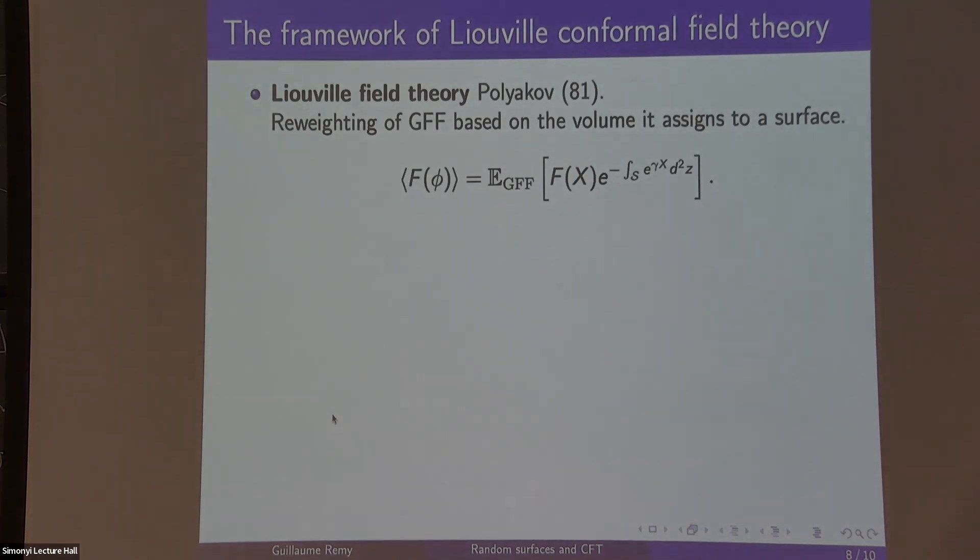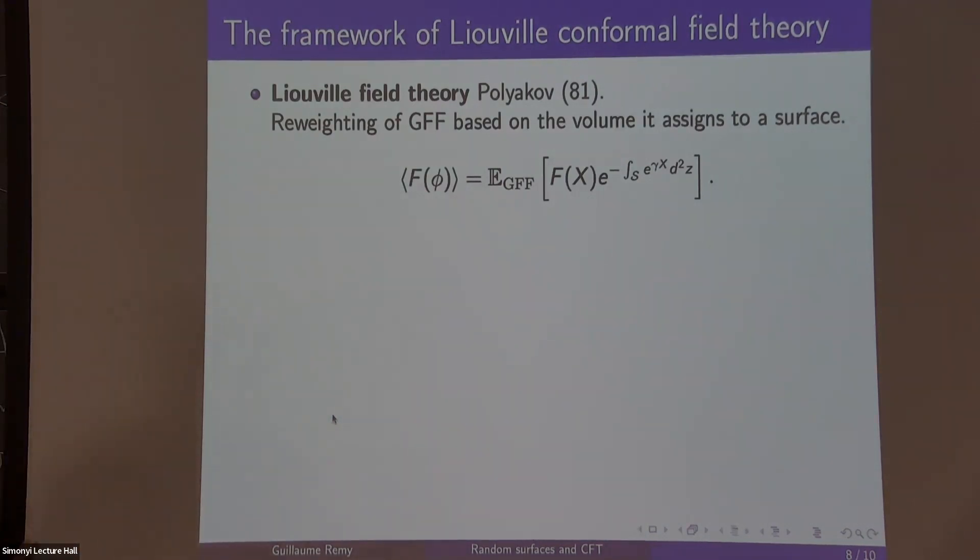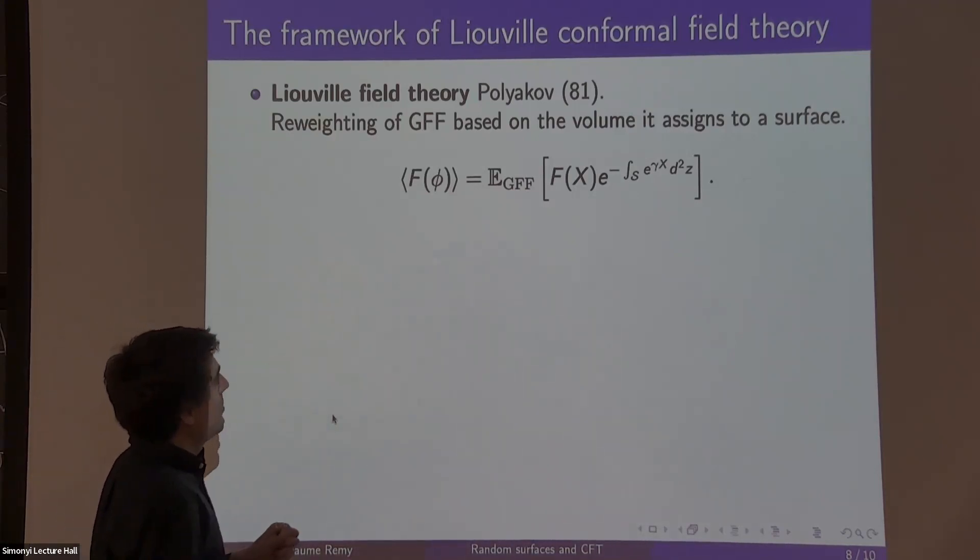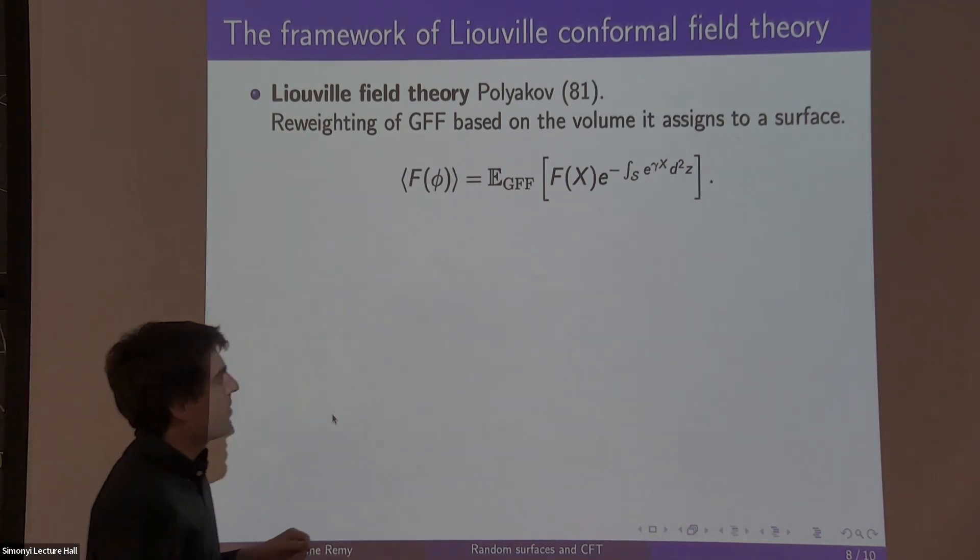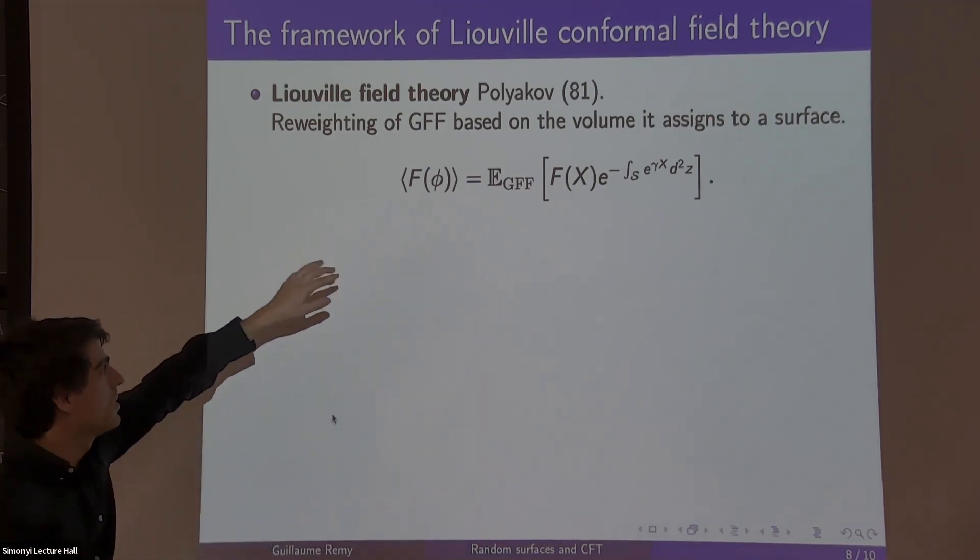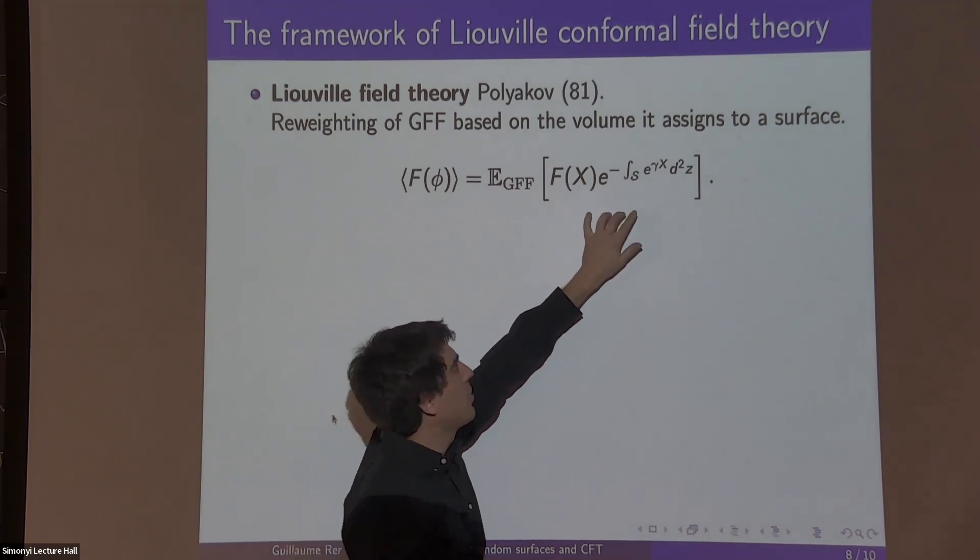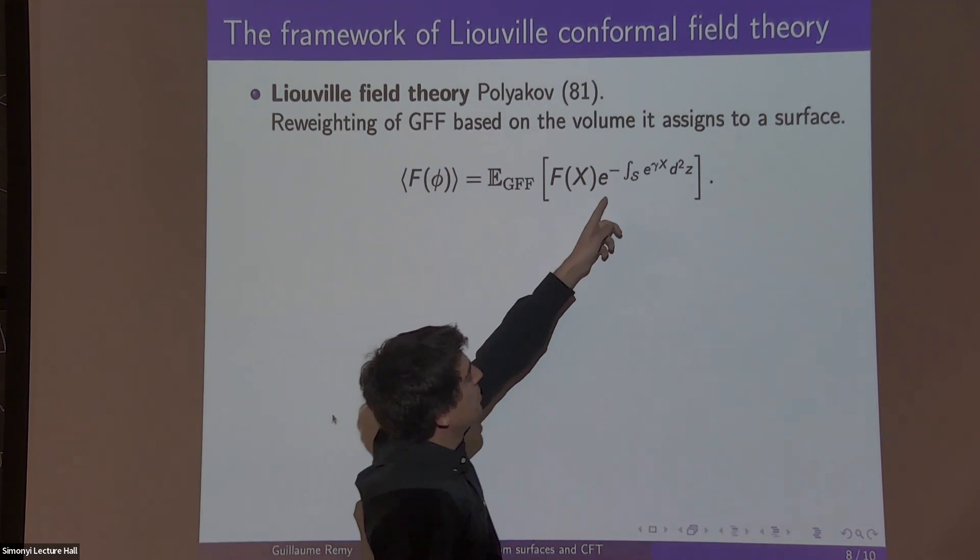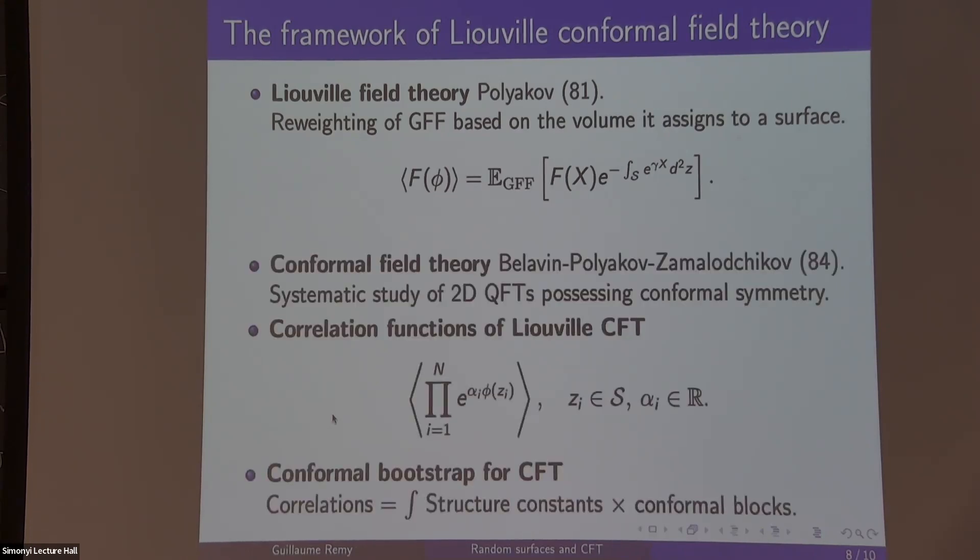So let me say a bit about what is this Liouville conformal field theory that appeared in our proof. This in physics originates back to the work of Polyakov. What you do is take your Gaussian free field X and re-weight its law by the total area it assigns your surface. So now it's the Liouville field. The expectation of any functional is the Gaussian free field expectation times this weight, which is the total volume it assigns. You no longer have free field theory, but it's going to be a conformal field theory, which means it's still integrable or solvable.